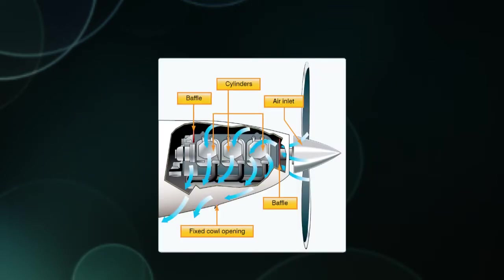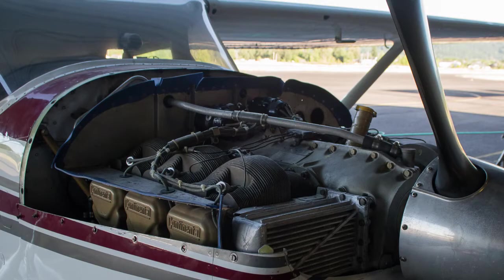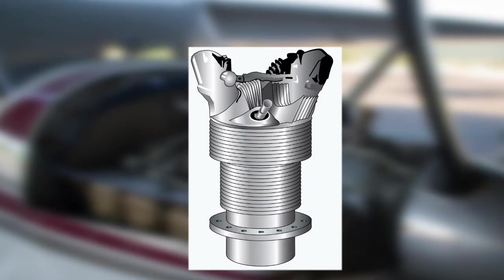The engine is also cooled by airflow getting into the engine cowling from the front. There are baffles inside the cowling — basically rubber strips — that direct the airflow over the hottest engine parts so the air doesn't just go everywhere without a specific purpose. The cylinders themselves also look different from car cylinders in that they have big fins on them, which increases the cooling area so the cylinder can be cooled much more effectively.